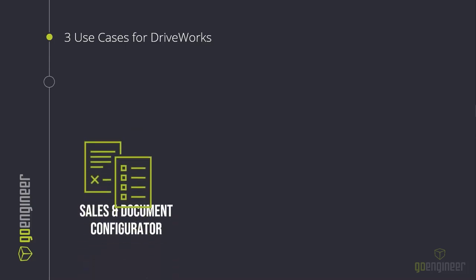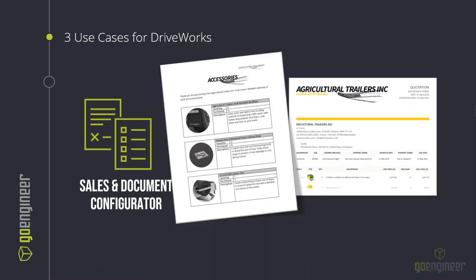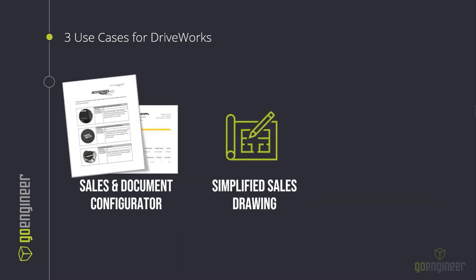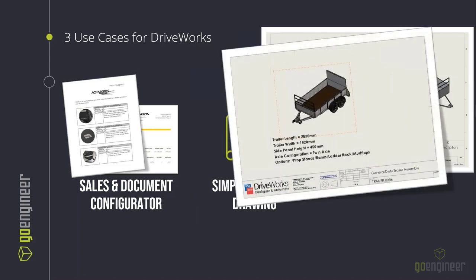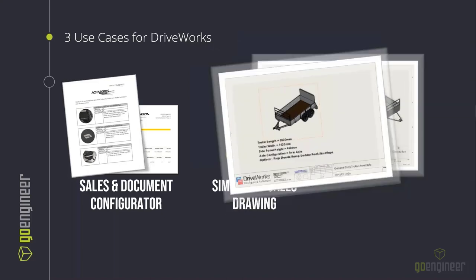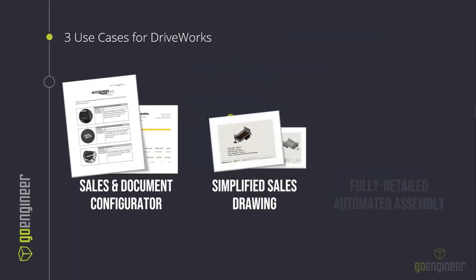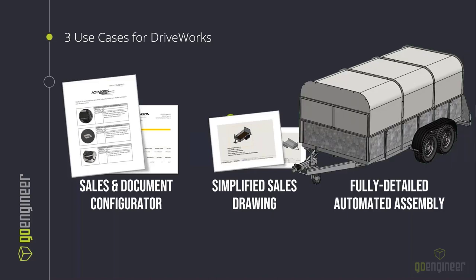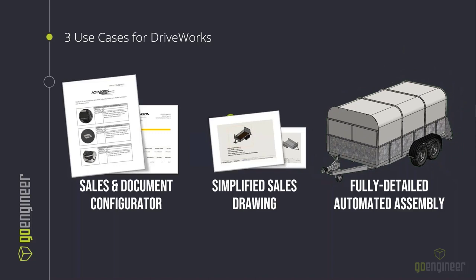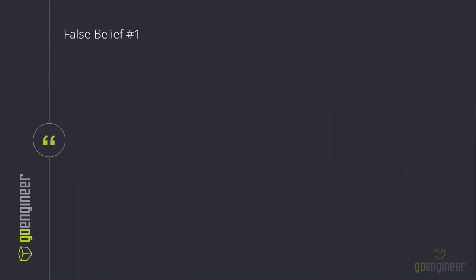Once you start using DriveWorks yourself, you might feel compelled to leverage all three use cases. DriveWorks Solo and Pro allow you to configure sales documents in HTML format or directly in Word, Excel, or PDF. You can create simplified versions of your model without releasing sensitive IP, or create fully detailed automated assemblies to automate all manufacturing files and instructions pertaining to your product's lifecycle. Almost everyone in business with customers has something to benefit from DriveWorks.